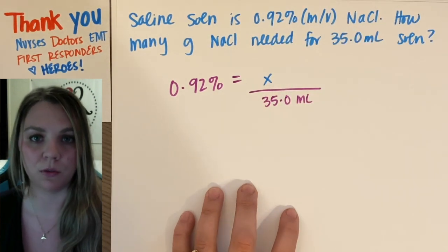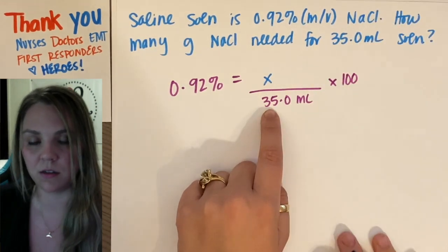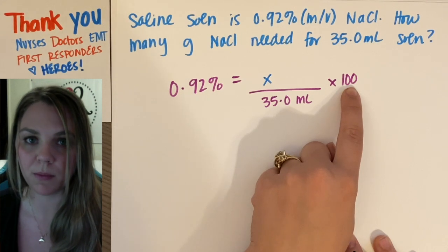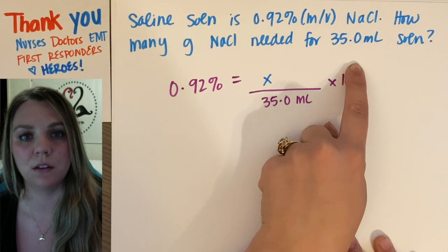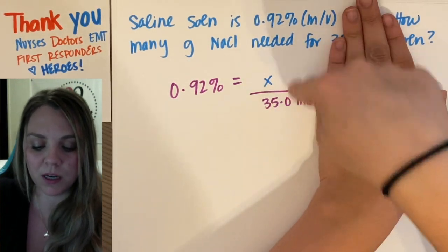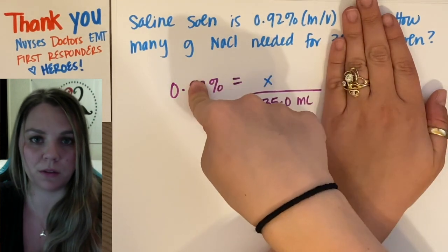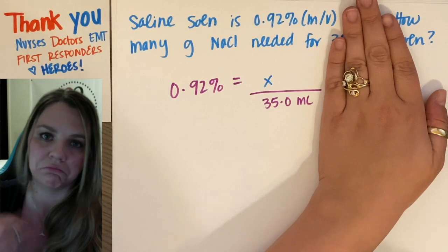And this is the part that everyone forgets. You have to multiply by 100. To get this percent, we multiplied by 100. So don't forget to multiply by 100 here. It's the number one mistake that's made. People will only put x over 35, they'll multiply by 0.92 and they'll have an answer and they're like, yeah, I'm done.